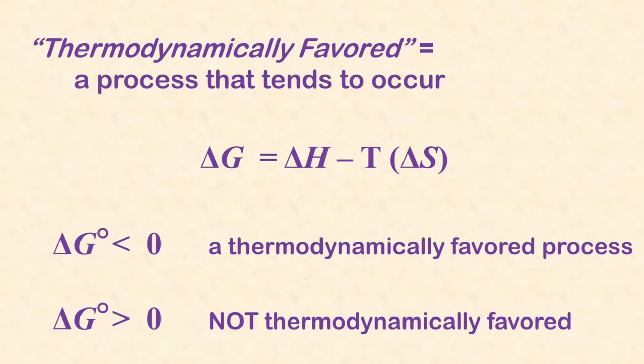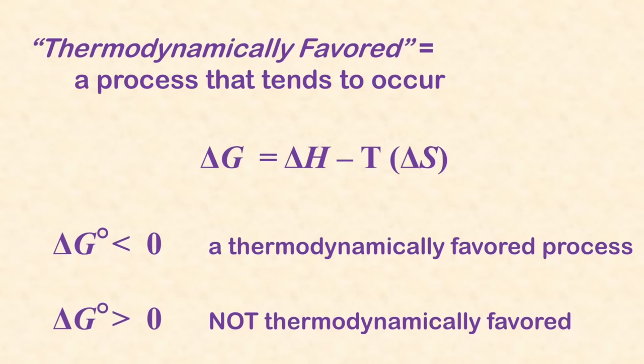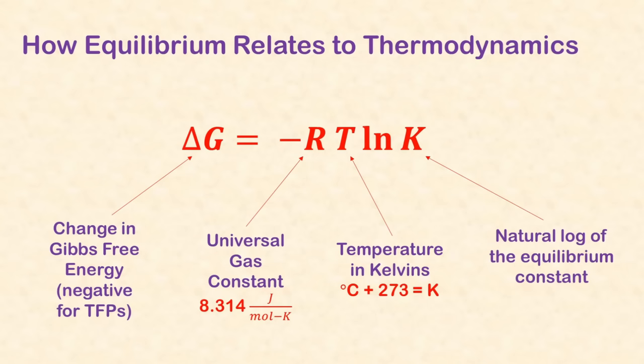Gibbs free energy, delta G, is a measure of the thermodynamic favorability of a process. Delta G equals delta H minus temperature in Kelvins times delta S. If a reaction is thermodynamically favored at a certain temperature, delta G is negative. If it's not favored, delta G is positive. Thermodynamic favorability is related to the equilibrium constant by the equation delta G equals negative R times T times natural log of K.